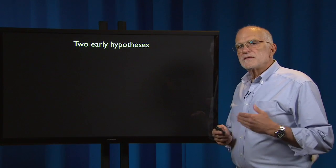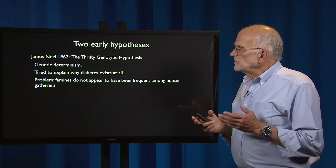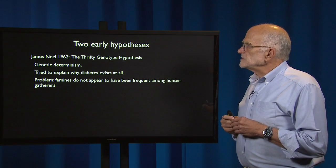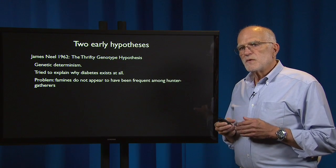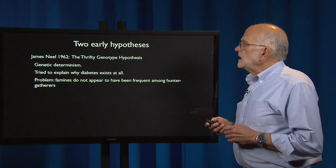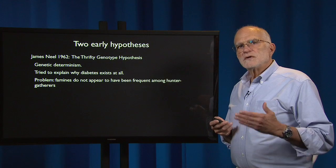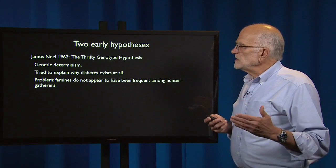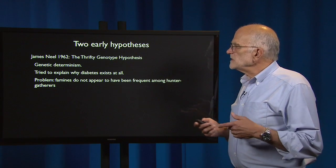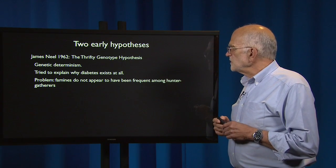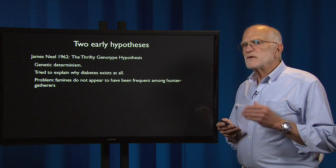There were two early hypotheses for the metabolic syndrome. James Neel offered the thrifty genotype hypothesis, based on genetic determinism. He was trying to explain why diabetes exists at all, and he posited that a condition of insulin resistance would have been beneficial if people had repeatedly been exposed to starvation. The problem is that famines do not appear to have been frequent among hunter-gatherers. Hunter-gatherers are not obese, but they are very rarely starving.